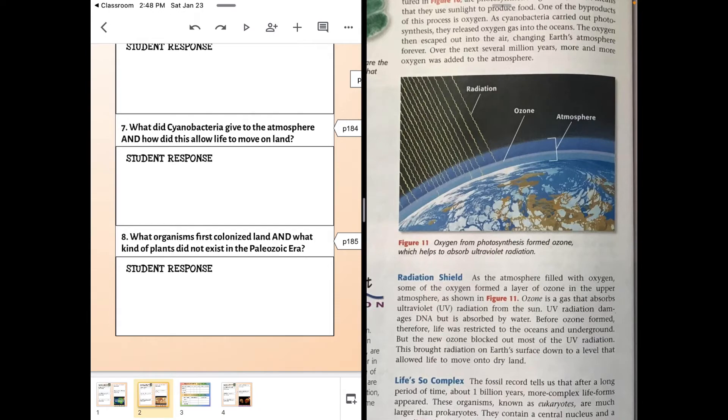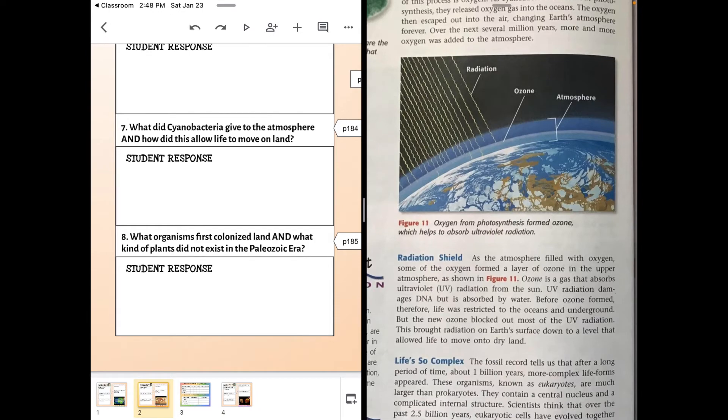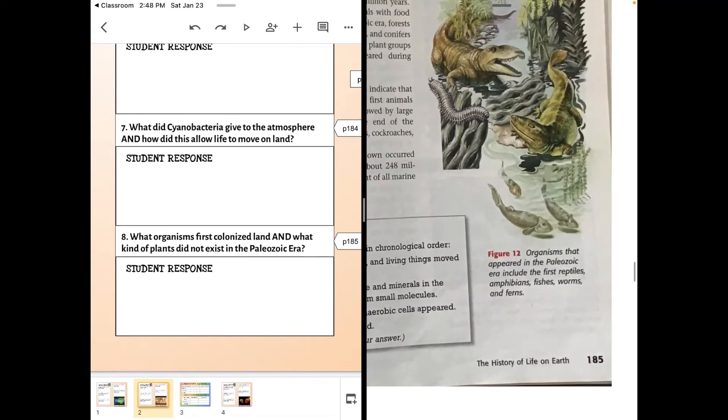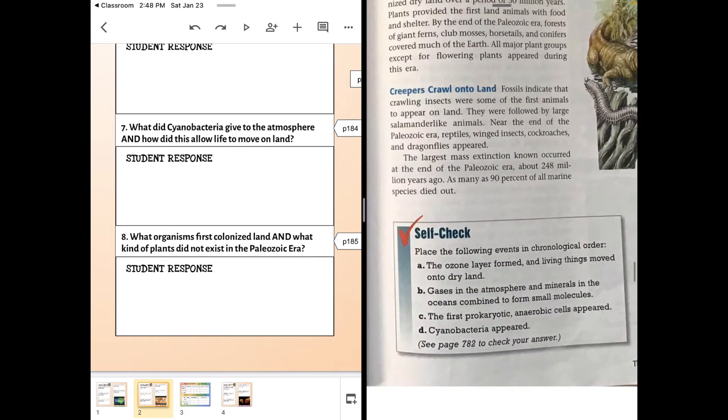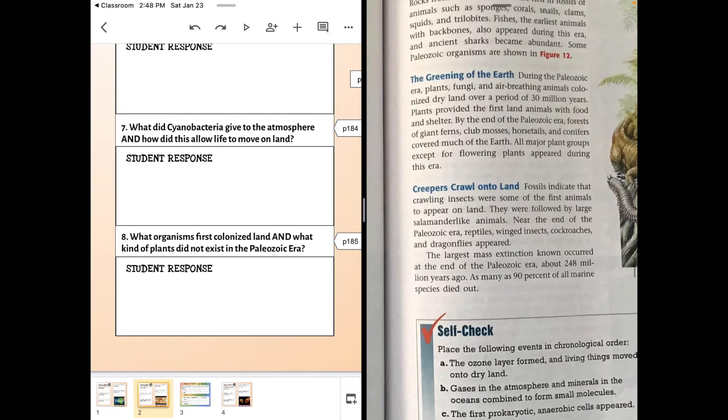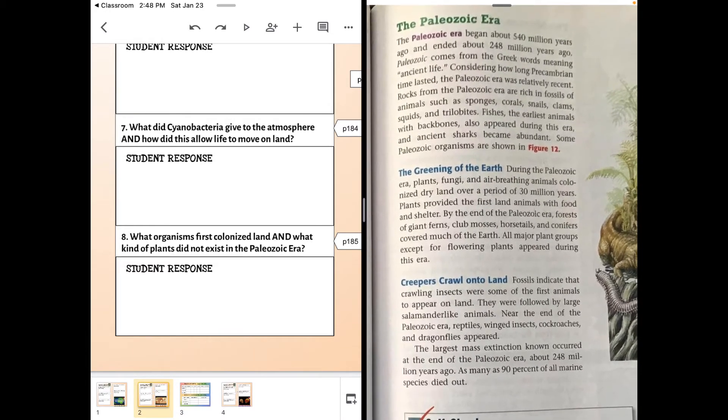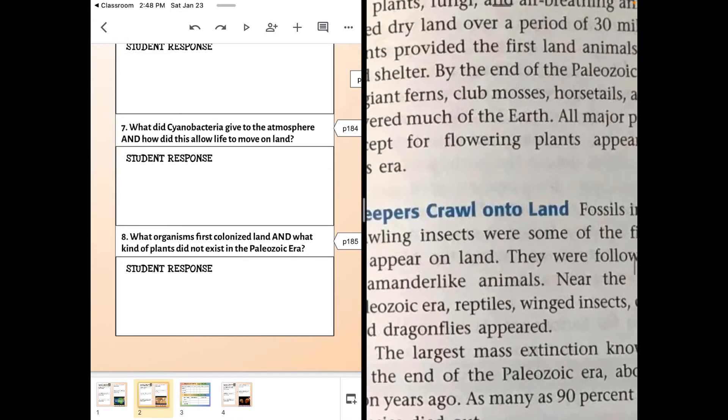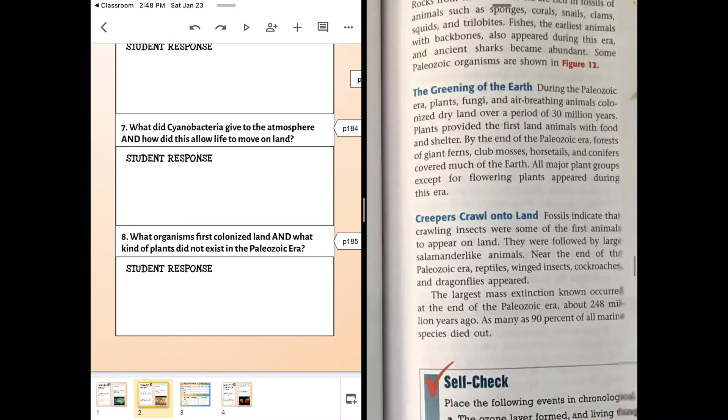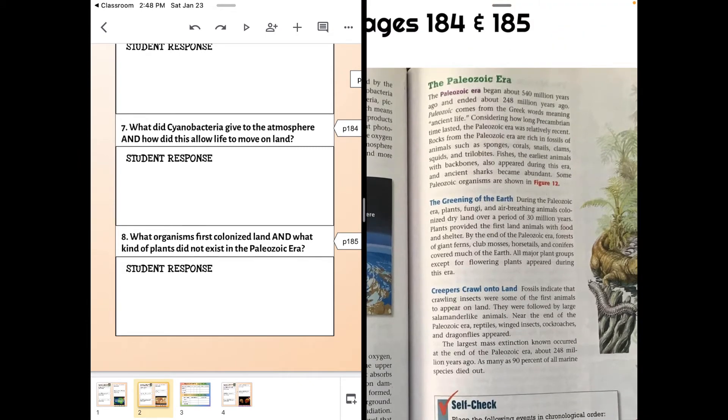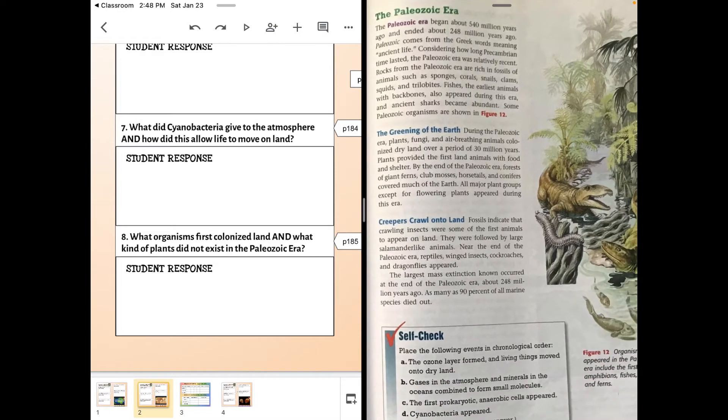What organism first colonized land, and what kind of plants did not exist yet? So you have to be very careful here, because the organism means any living thing. The first animals on land were creepy-crawly insects, but they weren't the first thing on land. So you want to read up a little further. And then the types of plants that hadn't made it out yet, you will find.